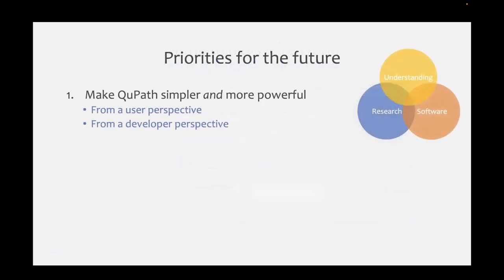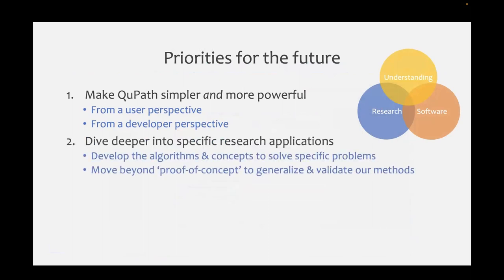Priorities for the future are to make QuPath simpler and more powerful - a difficult balance from both user and developer perspectives. We want to dive deeper into specific research applications, because we are a research group developing image analysis algorithms. To do that well, we need to think deeply about specific problems, because otherwise we'll come up with solutions that aren't solving any real-world problem. If we build on a simplified model of what we think biologists want, we need to actually work deeply with them.